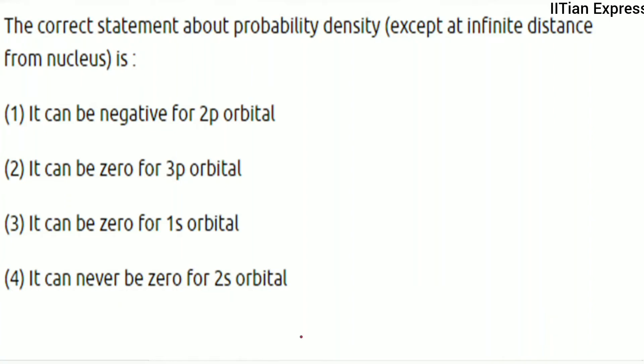Hello everyone. Today we're solving a question from JEE Main's 2020 paper. The question reads: The correct statement about probability density (ψ²), except at infinite distance from nucleus, is: